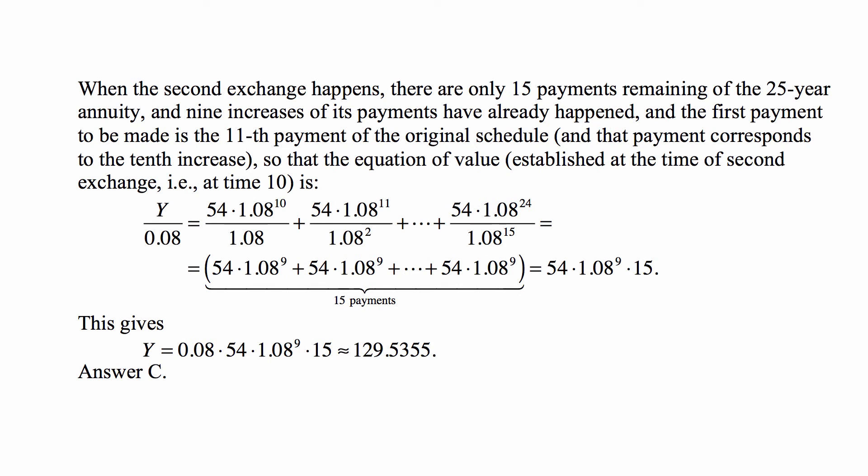When the second exchange happens, there are only 15 payments remaining of the 25-year annuity. Nine increases have already happened, and the first payment to be made is the 11th payment of the original schedule, which corresponds to the tenth increase. The equation of value at time 10 is: